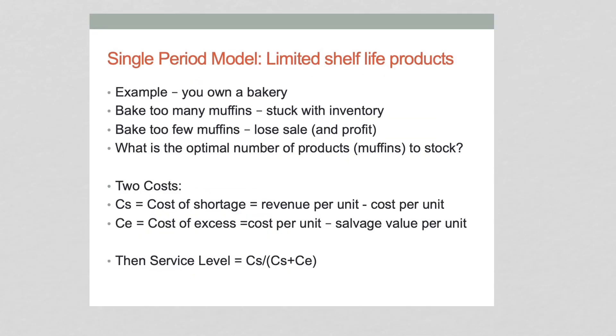Let's talk about that model. The single period model is for limited shelf life. As I said, for example, you have a bakery. Bake too many muffins and you're stuck with the inventory. Bake too few muffins and you lose the sale. The question is, what is the optimal number of products, in this case muffins, to stock? That's the question you want to know.